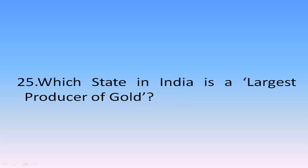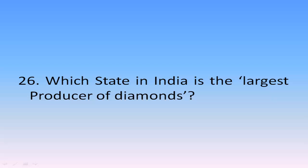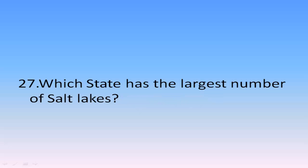Which state in India is the largest producer of gold? Karnataka. Gold mines are located in Kolar, Dharwad, Hassan, and Raichur districts. Which state in India is the largest producer of diamonds? Madhya Pradesh — it is the only state in India that accounts for 90% of the total diamond resources of the country. Which state has the largest number of salt lakes? Rajasthan.